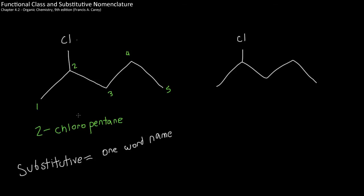Substitutive nomenclature uses one-word names — everything is stuck together, and it's traditionally what we've learned in the first parts of organic chemistry. Now functional class is where things get a little different. This only appears for alkyl halides and alcohols.